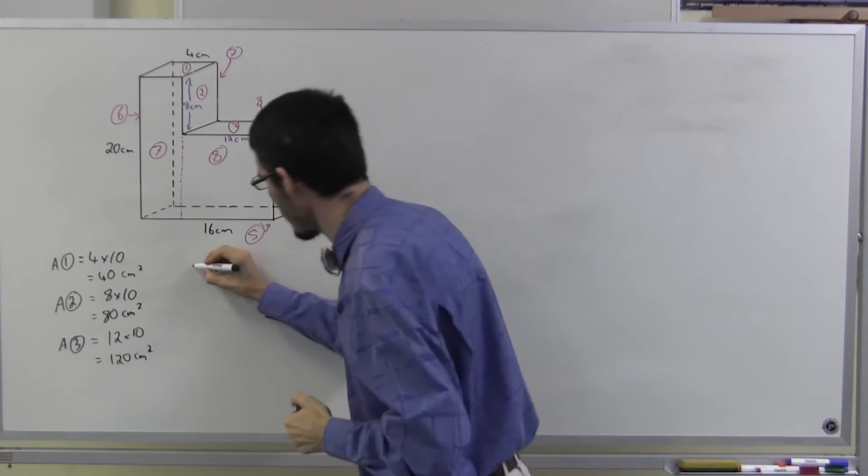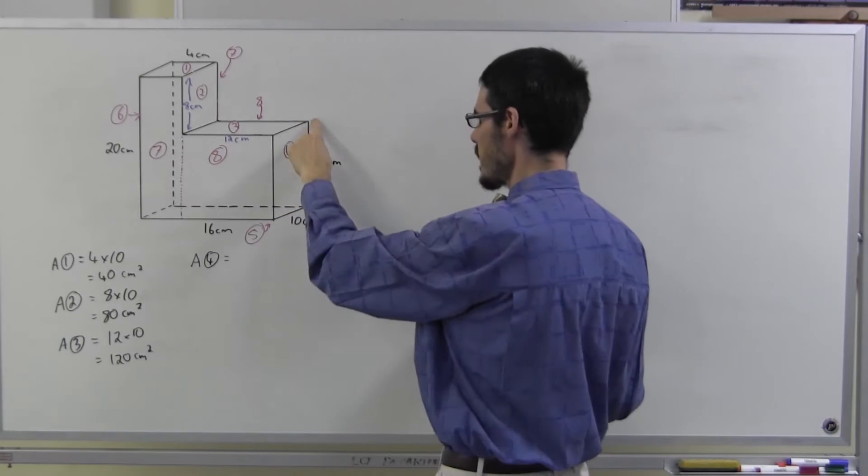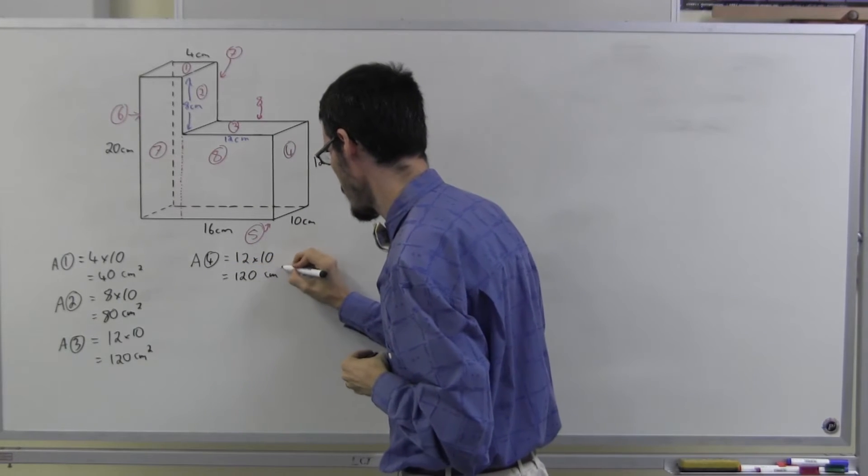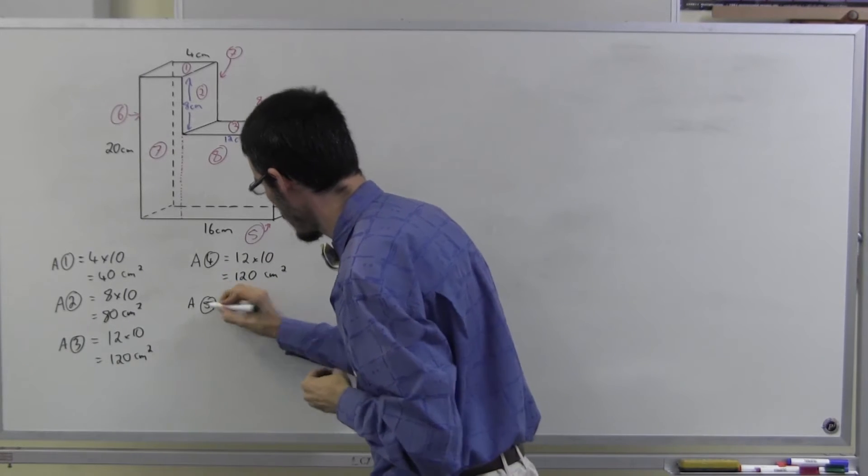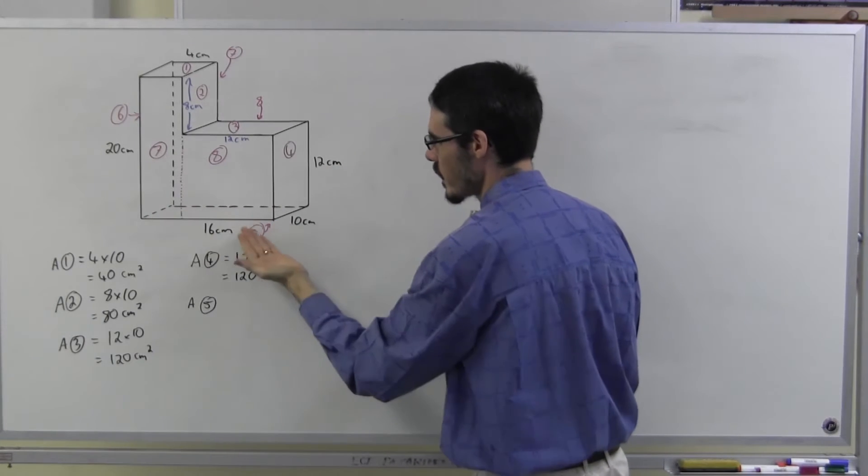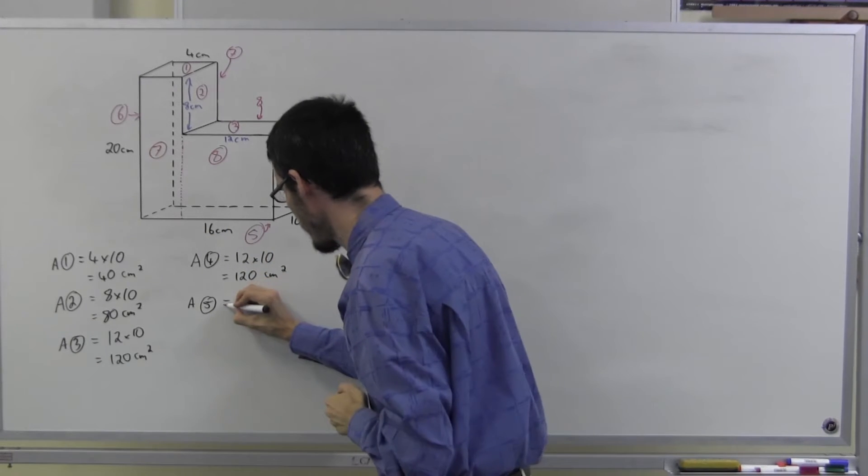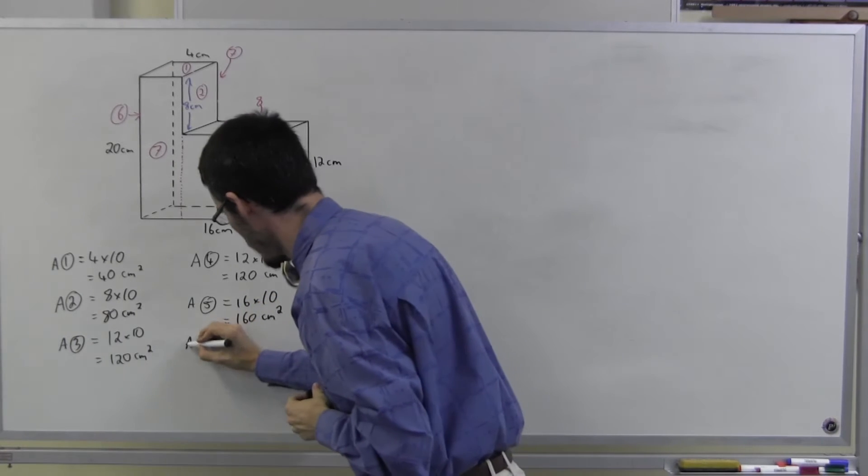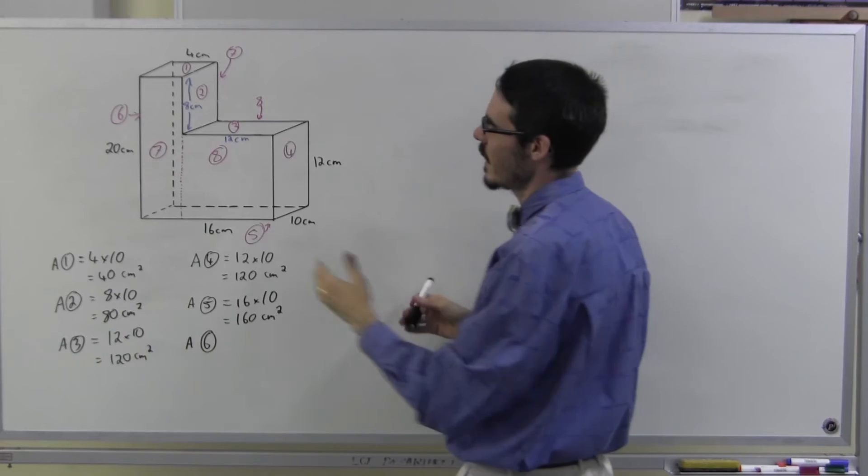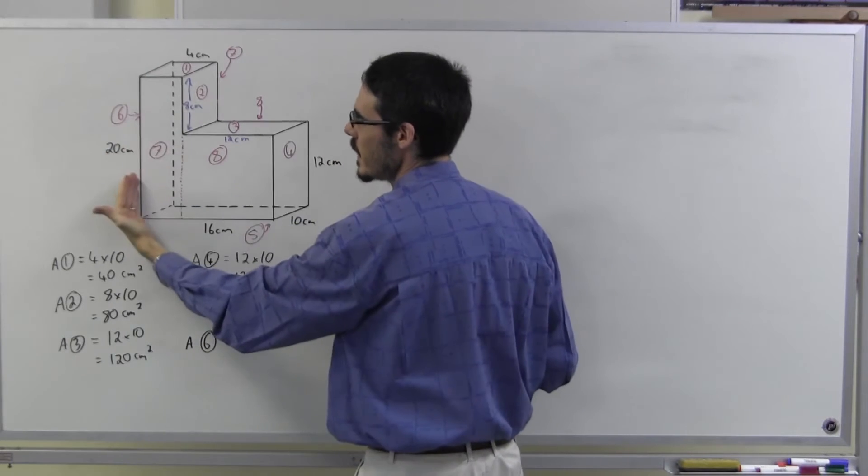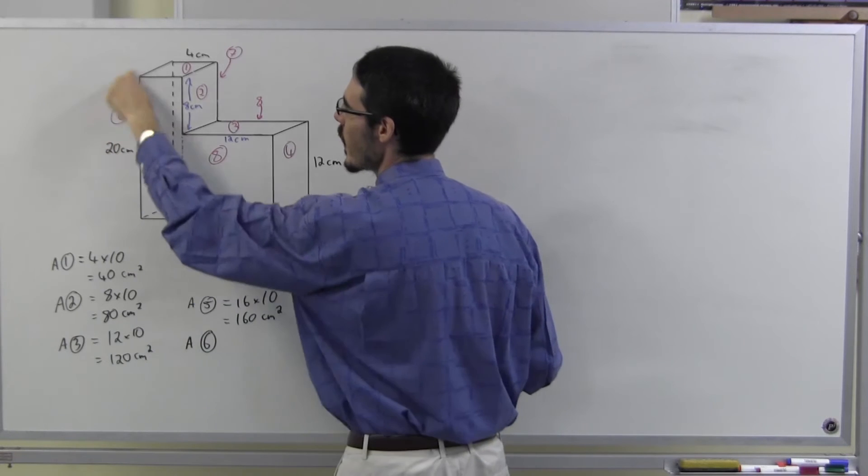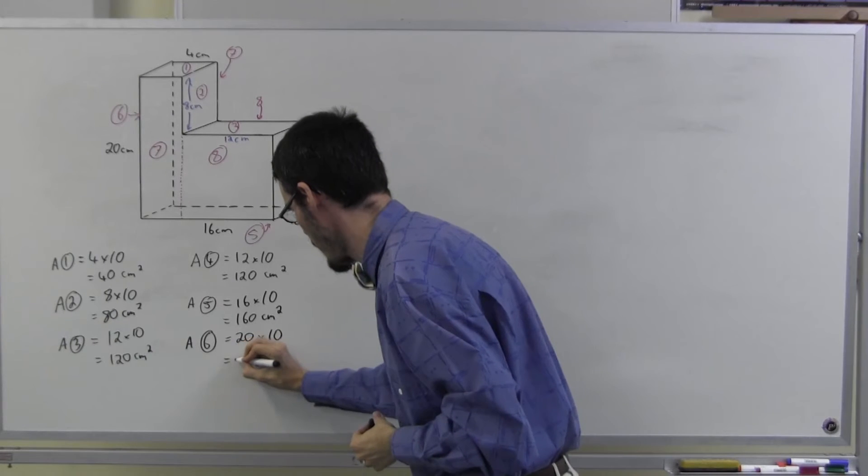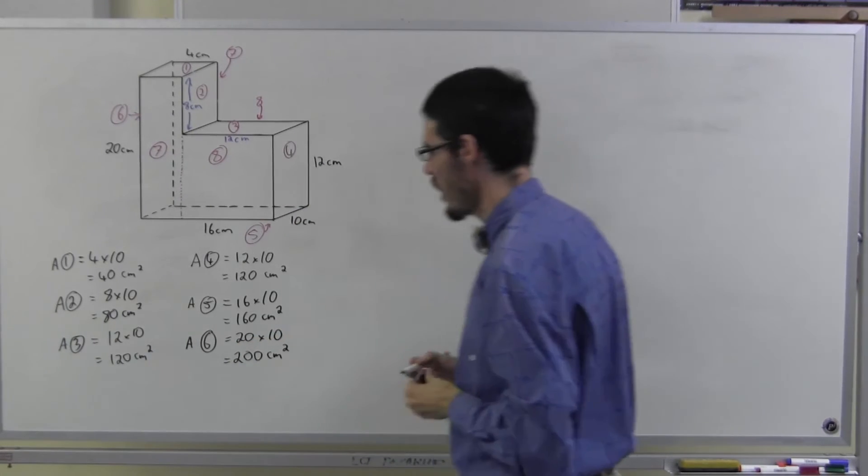Okay, four is a rectangle. It is 12 by 10. Five is a rectangle on the bottom. It's going to be 16 by 10. Six is on the left-hand side. Now, it's going to be 20 by 10 again.